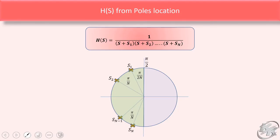We can also derive the pole location in another way. The transfer function H(s) is given by 1 upon (s + s₁)(s + s₂)···(s + sₙ), with total n poles. All poles are separated by π/n. The first pole is located in the anticlockwise direction from π/2 at a distance π/(2n). Locating the first pole and then placing all others separated by π/n, we get all pole locations for H(s) and from that we can find the transfer function directly without remembering the formula.